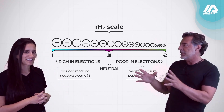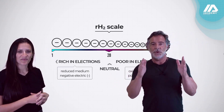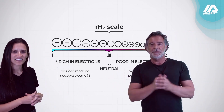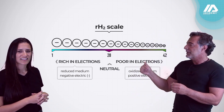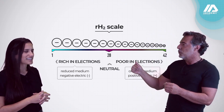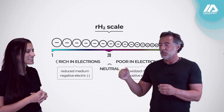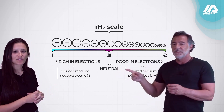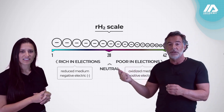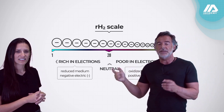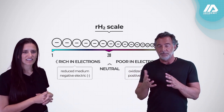Like the pH, the RH2 also has a scale. The scale is not like the pH from 1 to 14 — it's 1 to 42. And the neutral is 28. In the pH, as you remember, the neutral is 7.